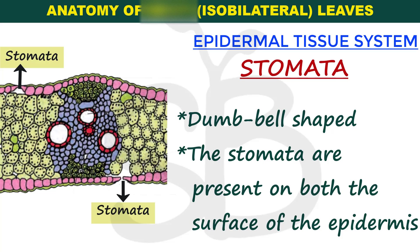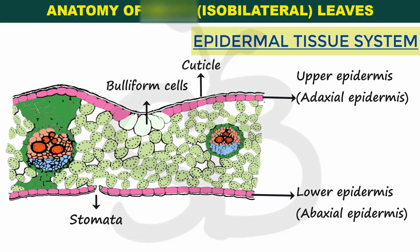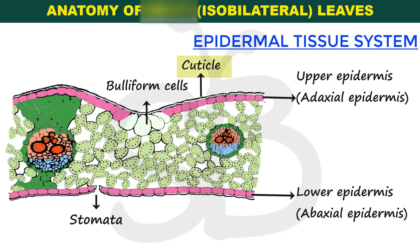Stomata are present on both the upper and lower epidermis surfaces. So for the epidermal tissue system of one monocot leaf: the epidermis has upper and lower epidermis covered by the cuticle, it has bulliform cells, and epidermal appendages including stomata which are equally distributed on both surfaces of the monocot leaf.